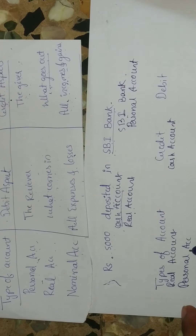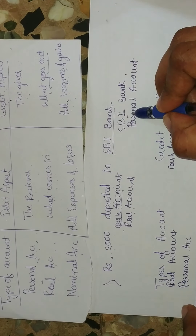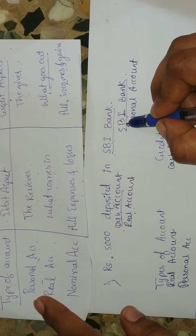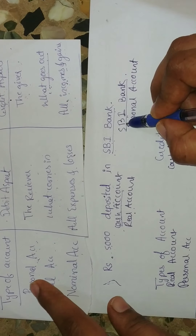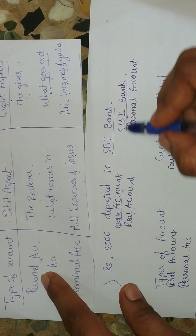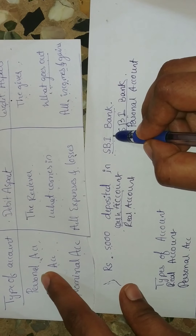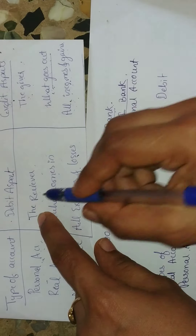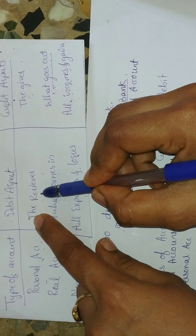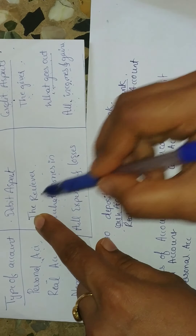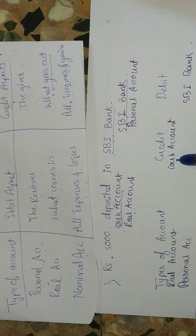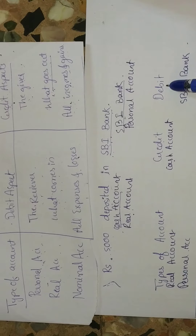For the personal account, the account affected is SPI Bank. SPI Bank is a personal account. Who is the receiver here? SPI Bank is the receiver because we are paying the amount into SPI Bank. Following the golden rule — receiver should be debited — so SPI Bank will come under the debit aspect. In summary: cash account is credit, SPI Bank is debit.